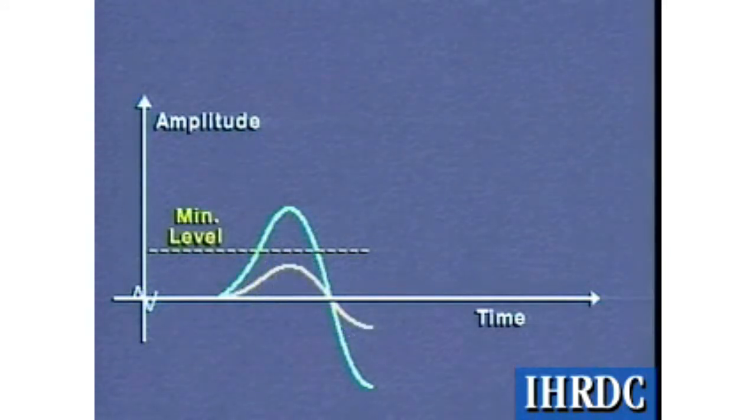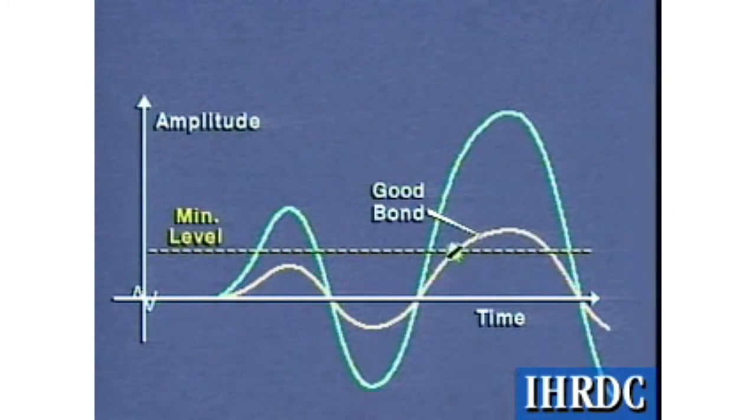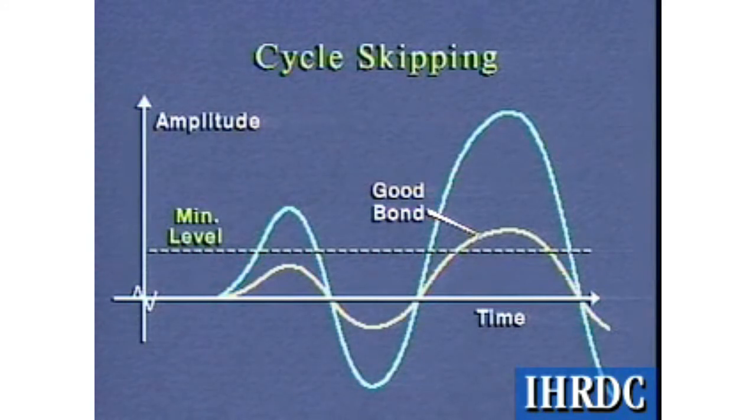If the pipe signal is very low, the first arrival may not reach the minimum amplitude level, but the second or later positive arrival may do so. This is known as cycle skipping. Neither of these effects should be of concern, since they relate to a condition of good bonding.